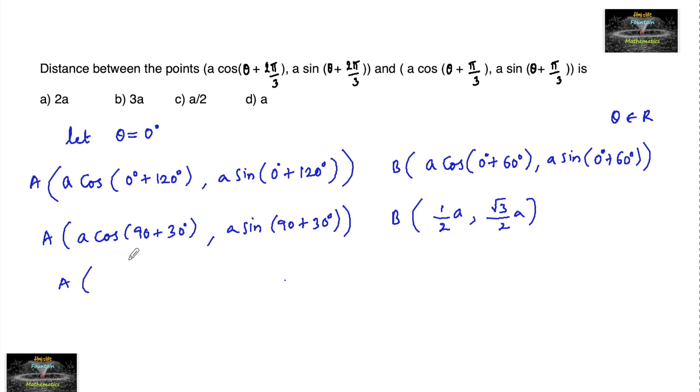Point A: cos(90° + 30°) is -sin(30°), which is -a/2. Sin(90° + 30°) is cos(30°), which is √3a/2. So point A is (-a/2, √3a/2) and point B is (a/2, √3a/2).